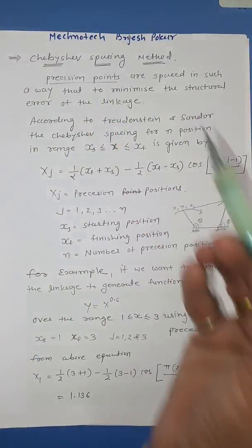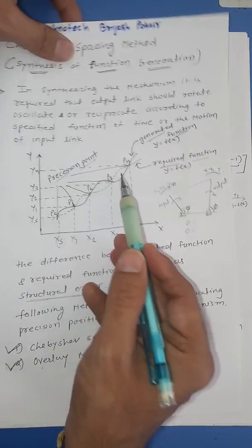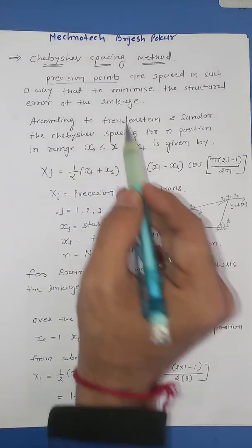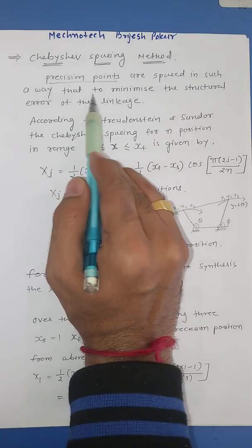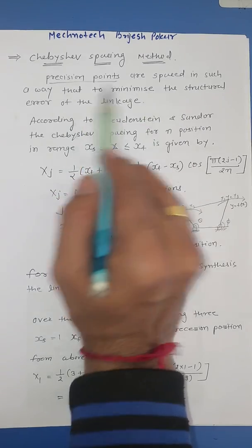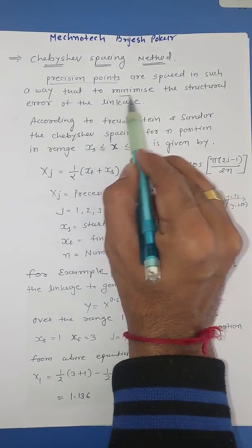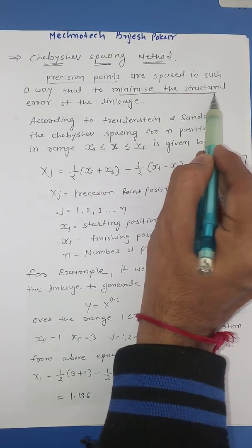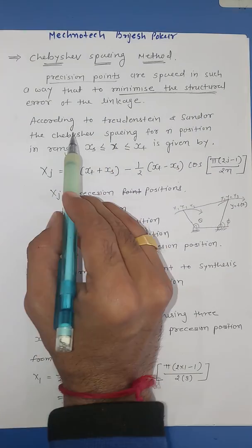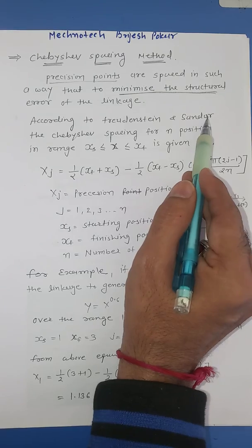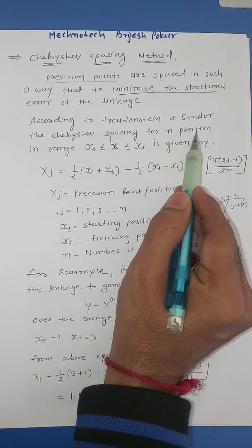The precision points are spaced in such a way that they minimize the structural error of the linkage. So what we have to do is minimize this structural error. According to Freudenstein's and Chebychev's spacing for n positions, we have an equation.